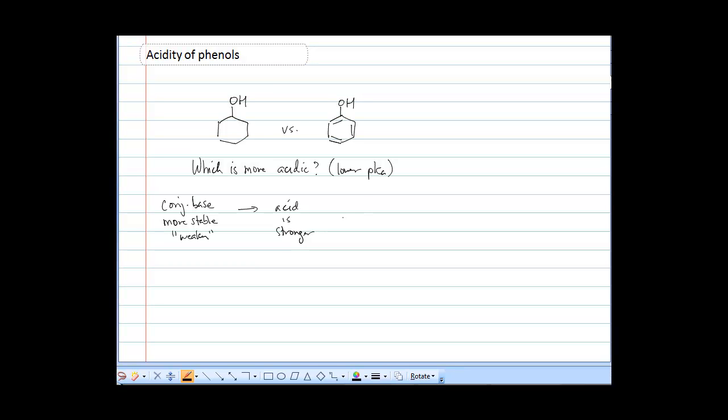And of course, the stronger the acid is, the lower its pKa. This is multi-layer thinking here. So let's start first with conjugate base. How do we know if it's more stable or less stable?